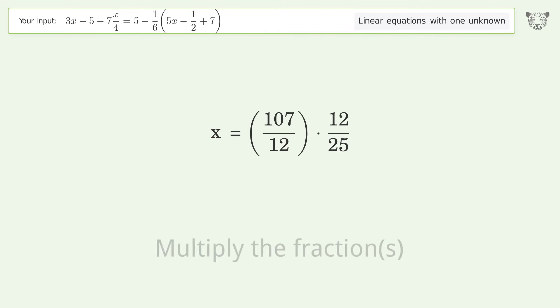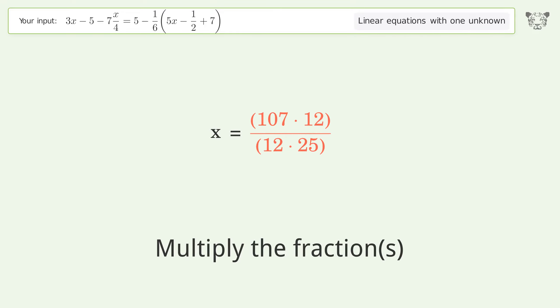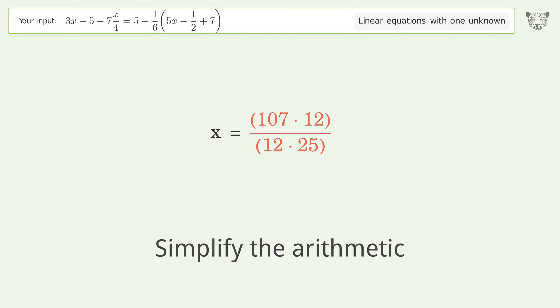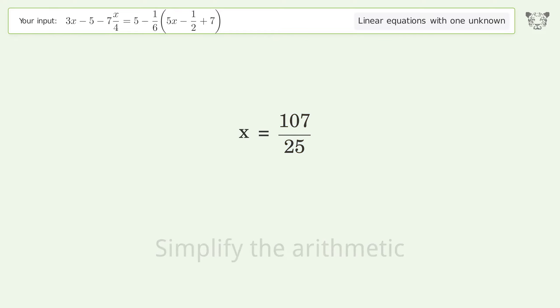Simplify the fraction. Multiply the fractions. Simplify the arithmetic. And so the final result is x equals 107 over 25.